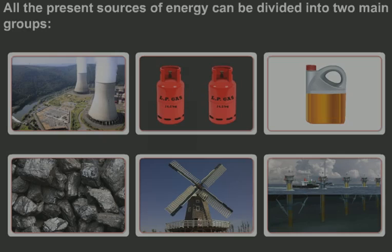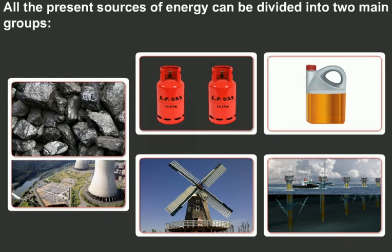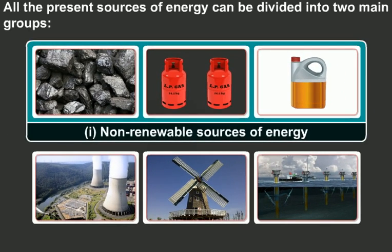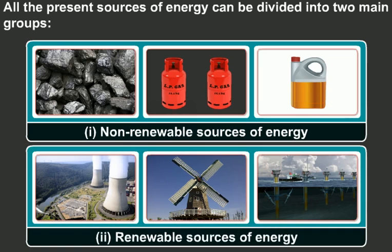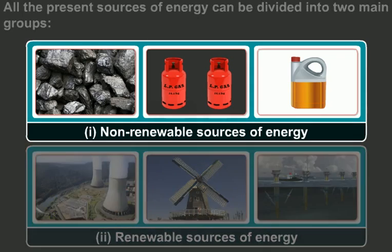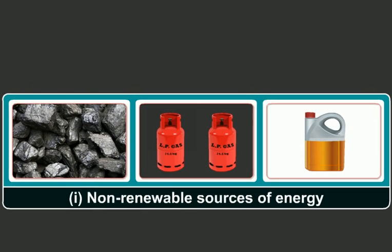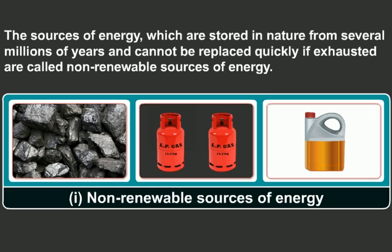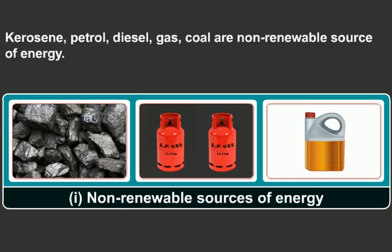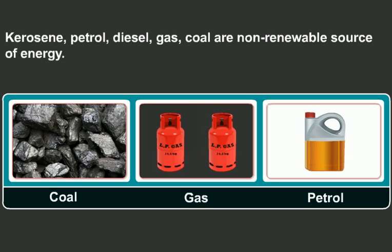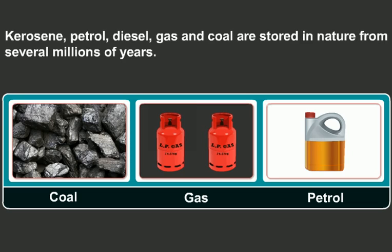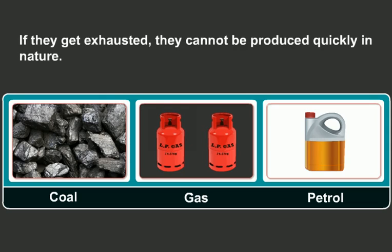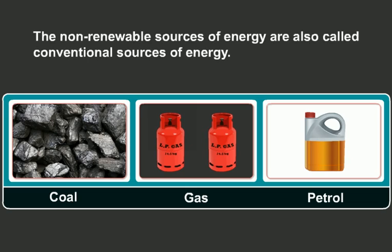The present sources of energy can be divided into two main groups: non-renewable sources of energy and renewable sources of energy. The sources of energy which are stored in nature for several millions of years and cannot be replaced quickly if exhausted are called non-renewable sources of energy. Examples include kerosene, petrol, diesel, gas, and coal. If they get exhausted, they cannot be produced quickly in nature.